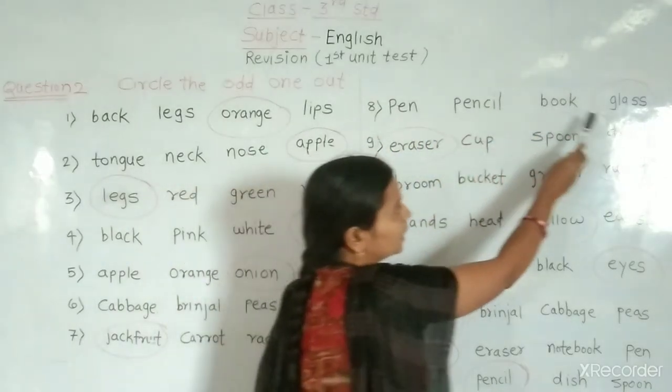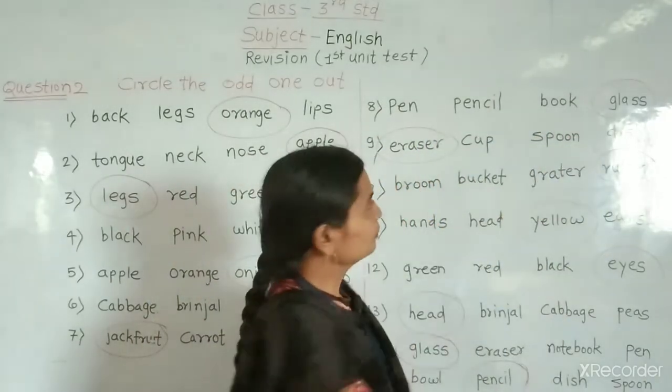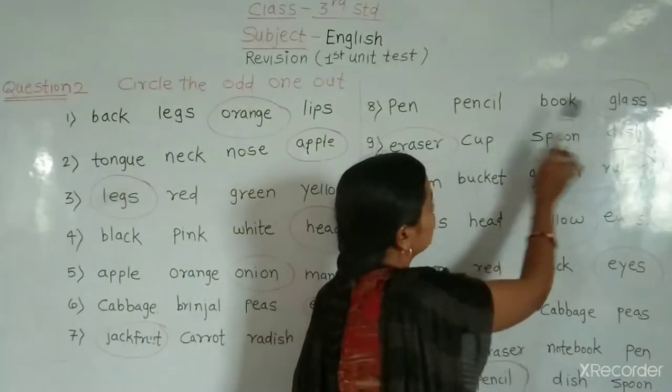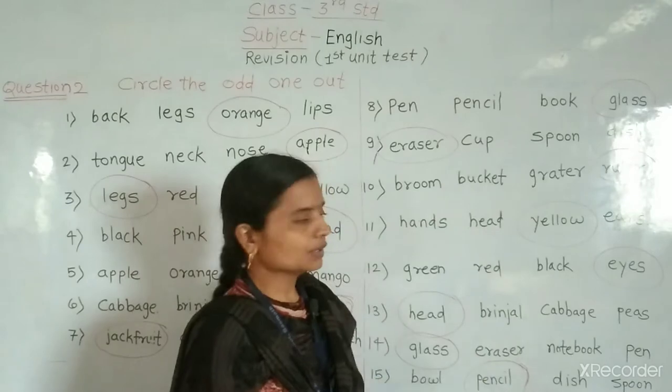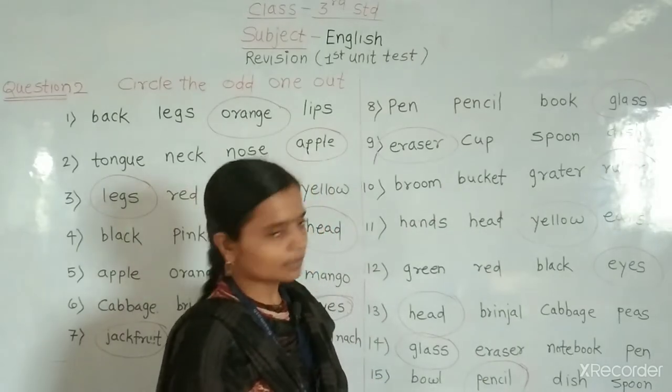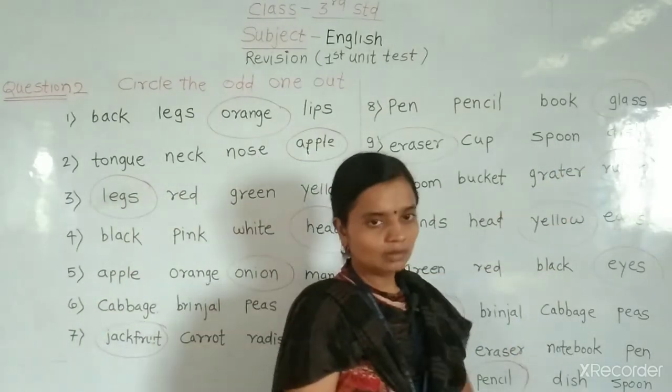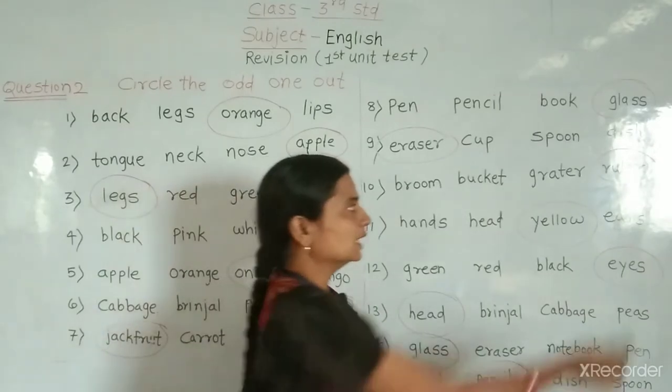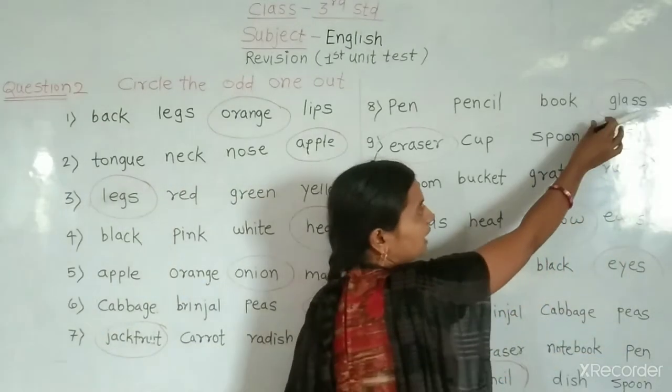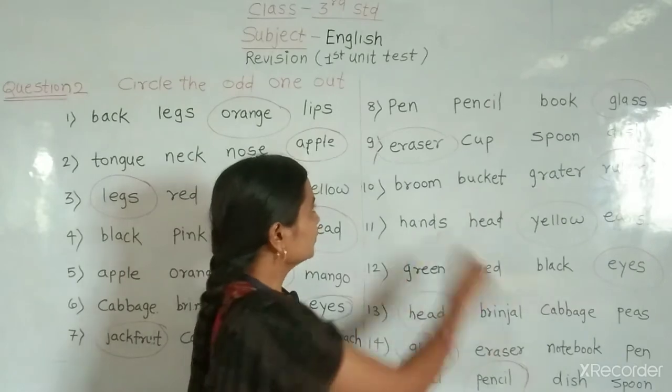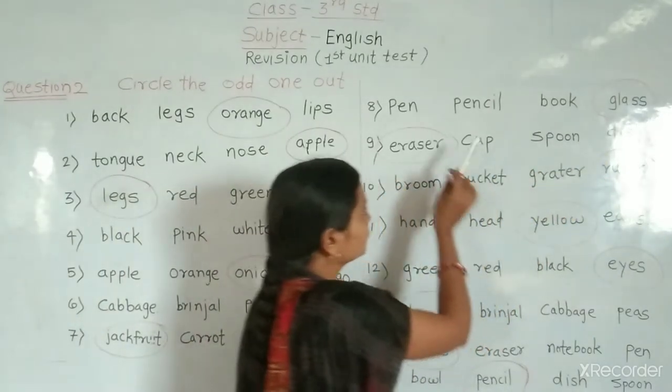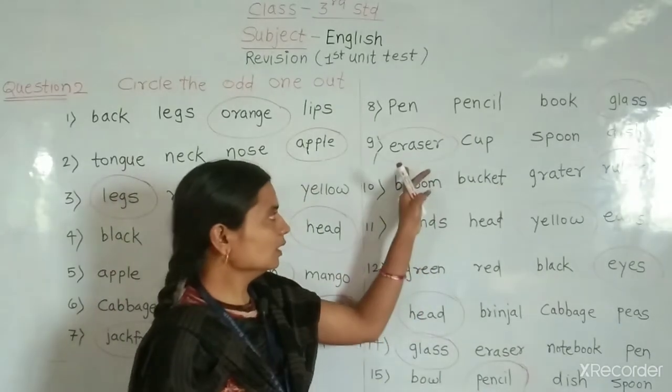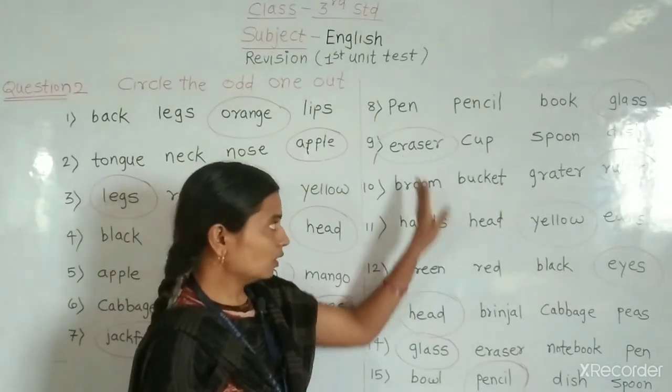Question number 8. Pen, pencil, book, glass. Pen, pencil, book. Things we use at school or study purpose. So glass is odd one word. Next 9. Eraser, cup, spoon, dish. Eraser, cup, spoon, dish. So eraser is odd one word.